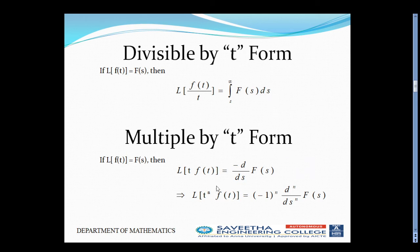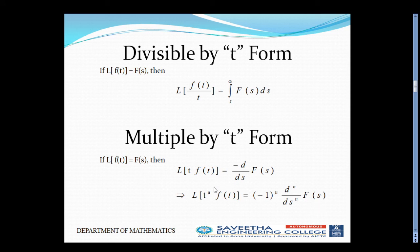Multiply by T form: when it is multiplied by T, the formula is minus d/dS of capital F(S). In general form, L of T^N · f(T) equals (-1)^N times d^N/dS^N of capital F(S). Whenever we substitute a value of N as 2, 3, and so on, the multiply by T formula changes accordingly.